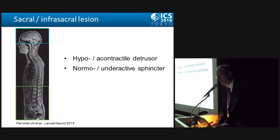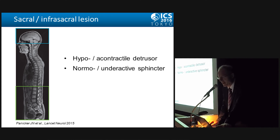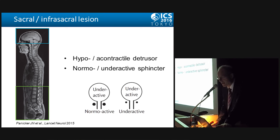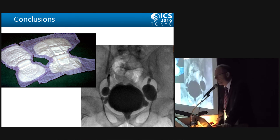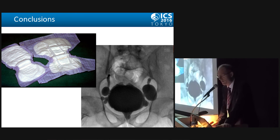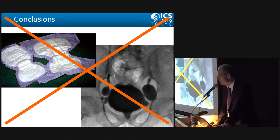In the case of a low lesion — a sacral or infrasacral lesion — the typical urodynamic pattern is a hypo or acontractile detrusor and a normal or underactive sphincter. In conclusion, whatever you do with your spinal cord injured patient, the aims are to protect the upper urinary tract and to achieve urinary continence. Thank you.